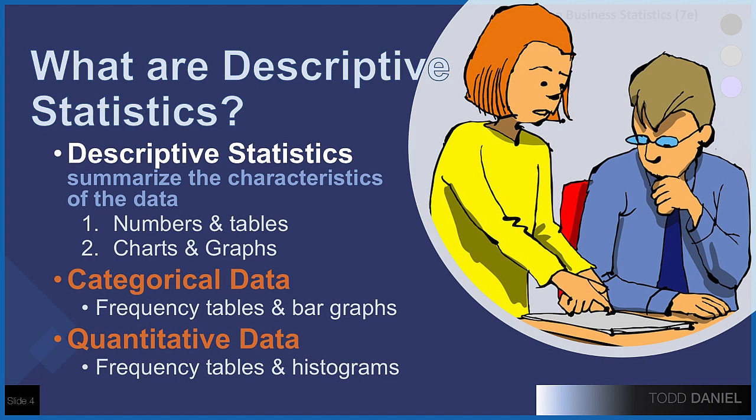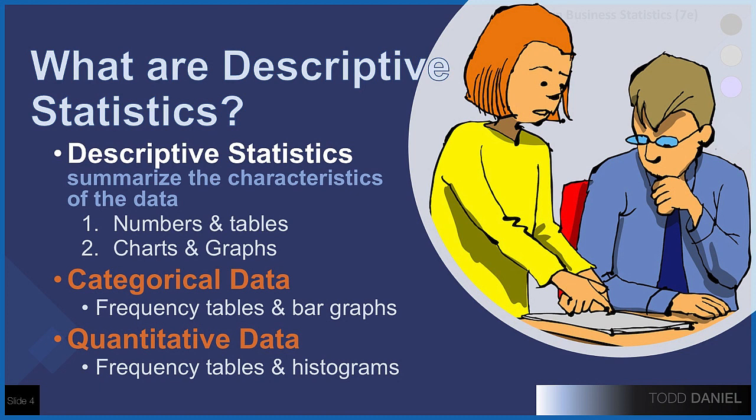So we should start off by answering the question, what are descriptive statistics? Well, if I ask you to describe a person, you would use words like tall or friendly or outgoing. If I ask you to describe a place, you might say that it is quiet or cold or sunny. If I ask you to describe data, we have really two ways of doing that. We can use numbers, which we tend to put into tables because tables help to organize the numbers, or we can make pictures, which we call charts, or sometimes we call graphs, two words for the same thing. Our options for describing data are numbers and pictures.